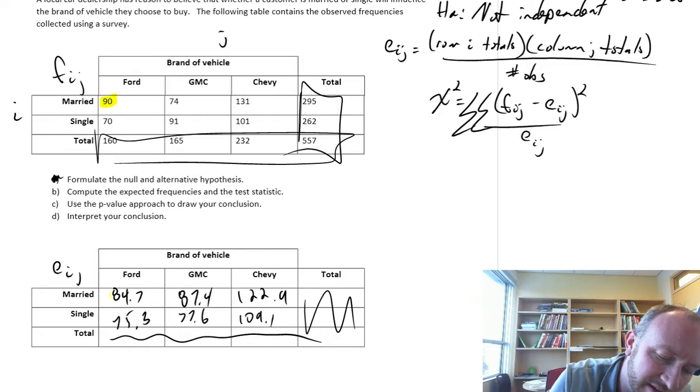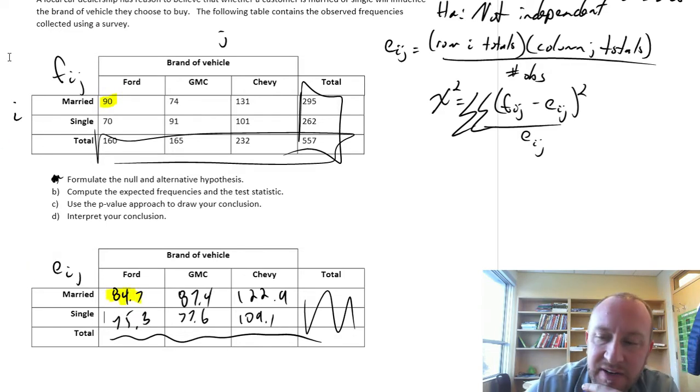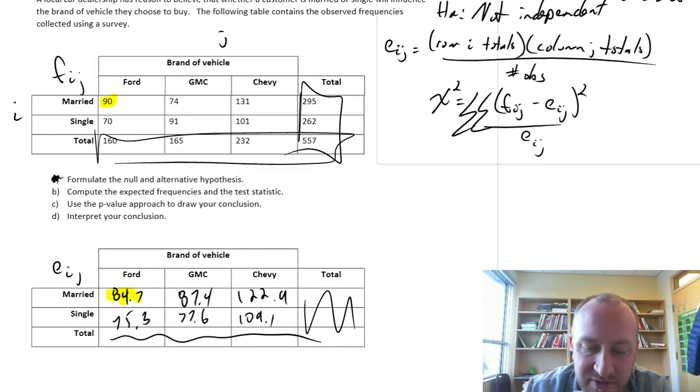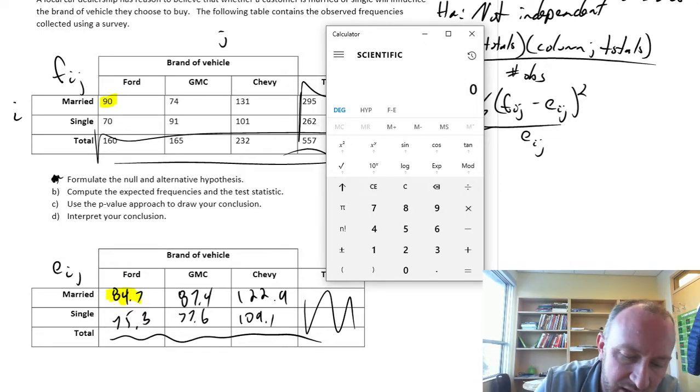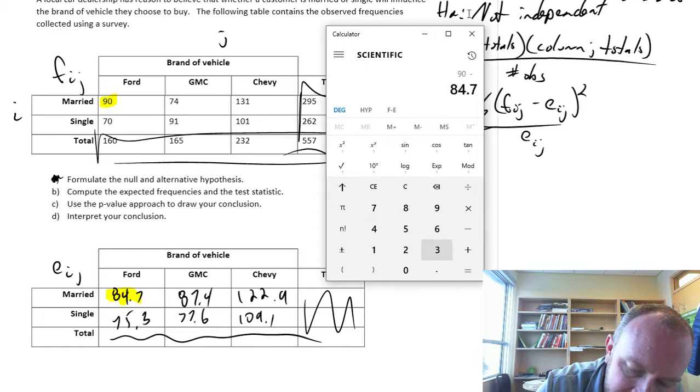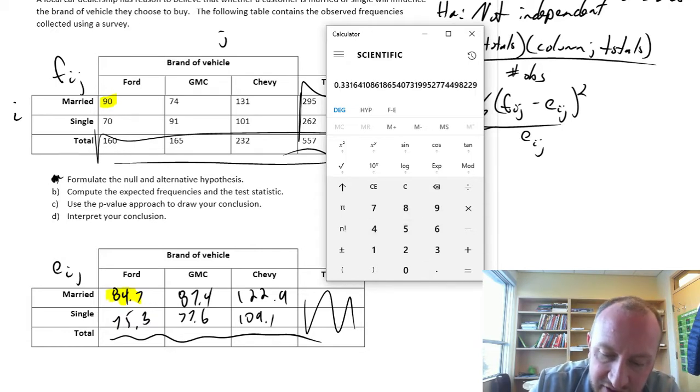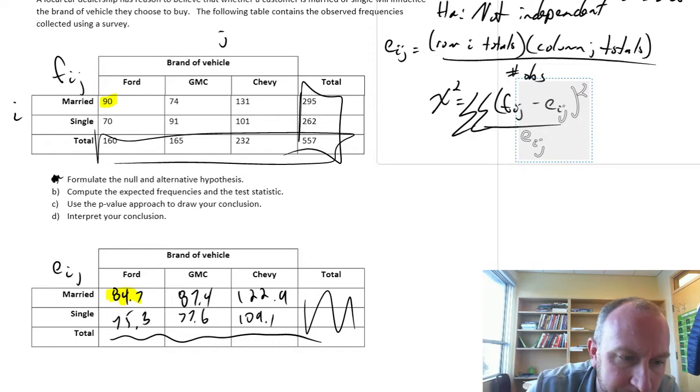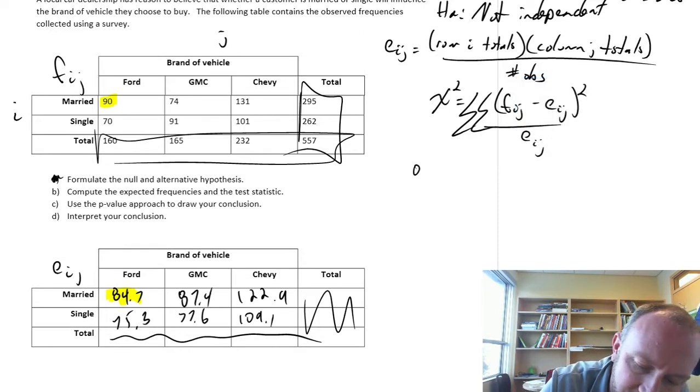So the first one is married, so there's our observed value, there's our expected value. So 90 minus 84.7, we square it, and we divide it by the expected value, 84.7, and I have 0.33. So 0.33.